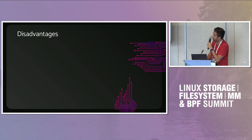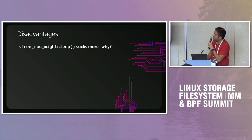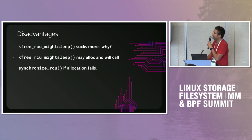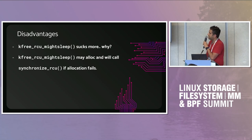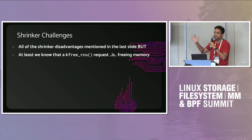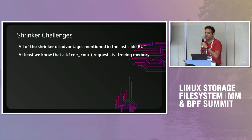Advantages of Kfree RCU: nice cache locality by using a page of pointers rather than traversing a linked list, and we can use Kfree Bulk APIs. Disadvantages: Kfree RCU may sleep and it may allocate memory while trying to free — which is awkward. If allocation fails, we call synchronize_rcu instead of sleeping in the allocator, which is bad but only happens in extreme cases. The shrinker has similar disadvantages, but at least in the Kfree RCU case we know memory is being freed, whereas with regular RCU callbacks we have no idea.